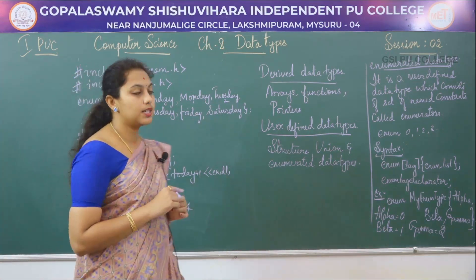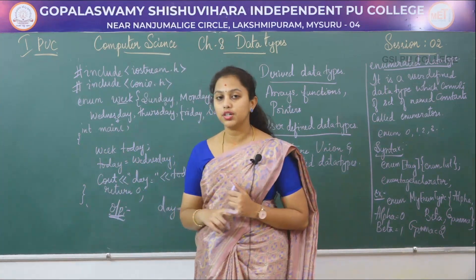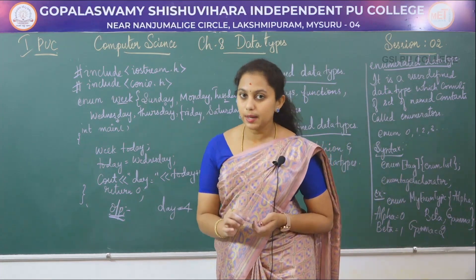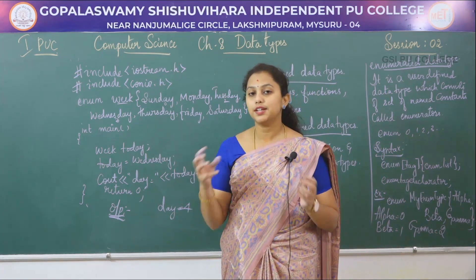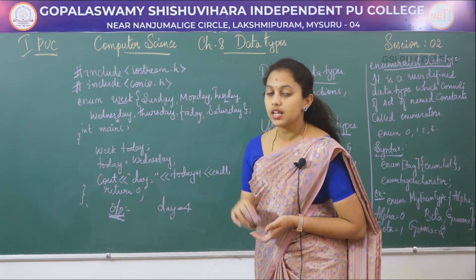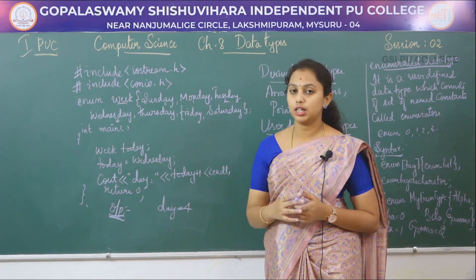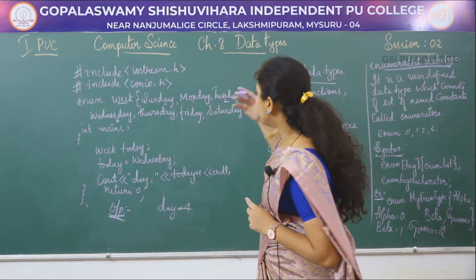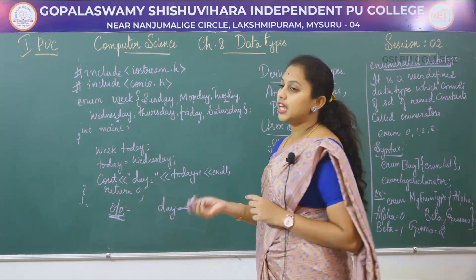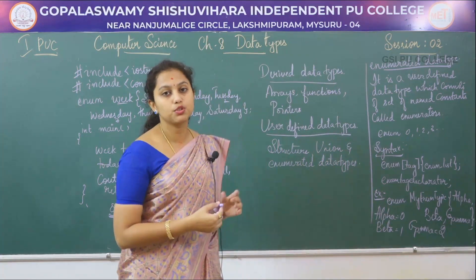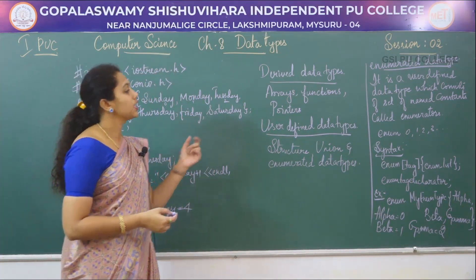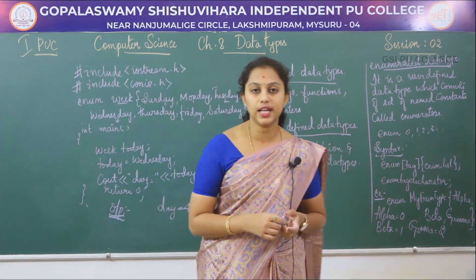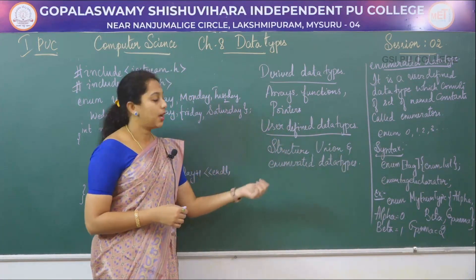In this session we discussed modifiers. A modifier is used to alter the meaning of the base type so that it more precisely fits the needs of various situations. There are four types: short, long, unsigned, and signed integers. Derived data types are derived from simple data types; some examples are arrays, functions, and pointers, which we will study in detail in later chapters.